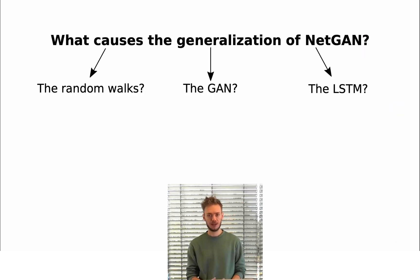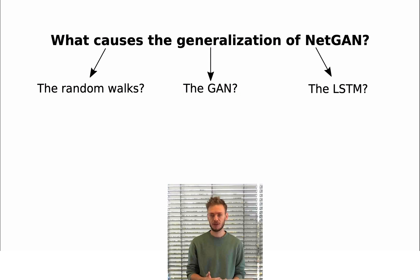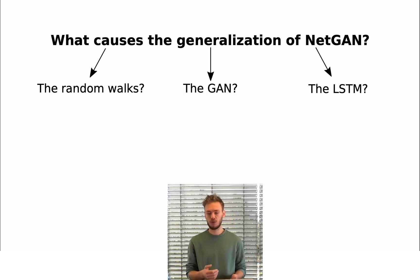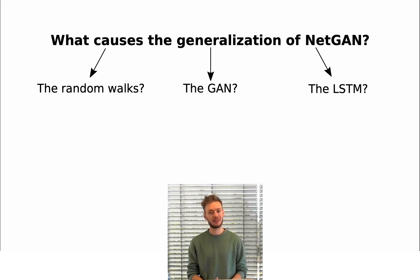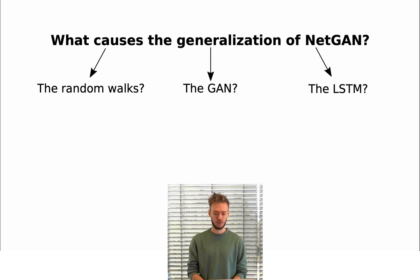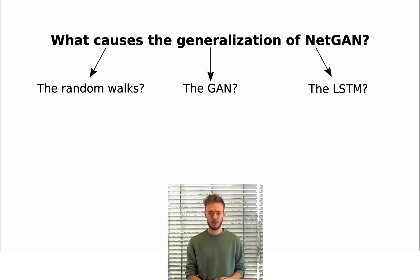The question that we answer in our paper is: what causes the generalization of NetGAN? Because every such graph generative model needs to have some kind of bias about which graph properties it wants to preserve, or what kind of graphs are considered a priori more likely. And even though the NetGAN pipeline doesn't make it explicit, it still needs to implicitly have this bias somewhere.